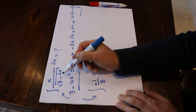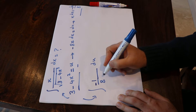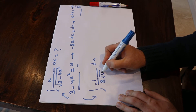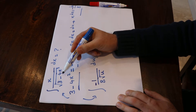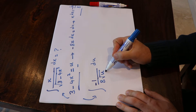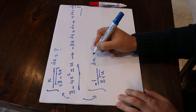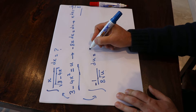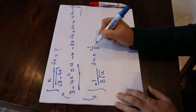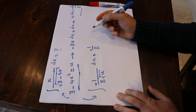And instead of the square root of 3 minus 4x², I simply write the square root of u, because instead of 3 minus 4x² I can use the parameter u. Therefore this integral will be equal to minus 1 divided by 8. This is a constant, and I can take it out of the integral.